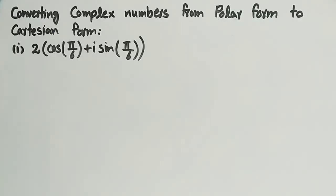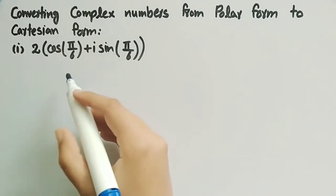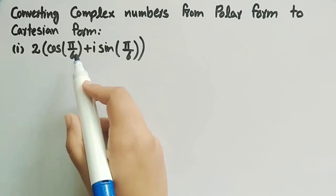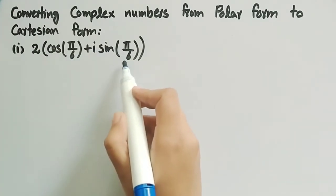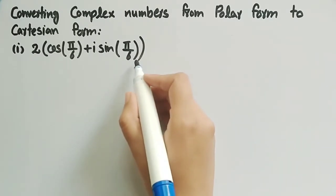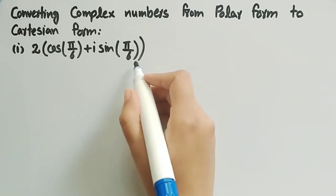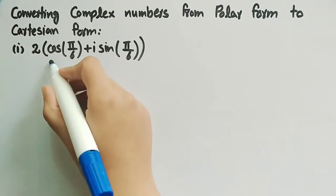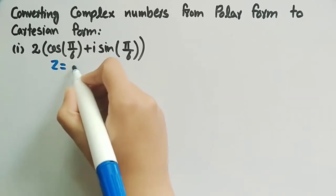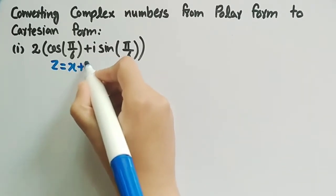In this video we will discuss few examples in which we will learn how to convert complex numbers from polar form to cartesian form. Firstly we will discuss the example 2 cos(π/6) + i sin(π/6). This is a complex number in polar form and we have to convert it in cartesian form. We know that a complex number in cartesian form is of the form z = x + iy.